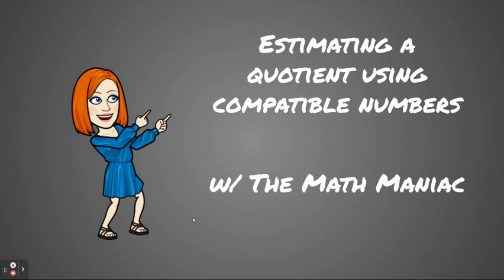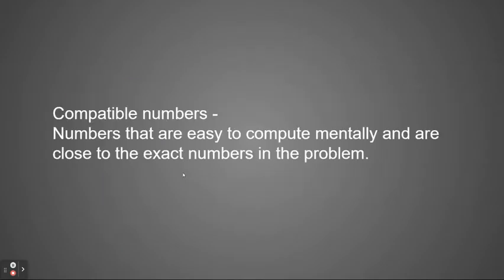Hi boys and girls, welcome back. Today we're going to be estimating quotients using compatible numbers. So the first thing we need to understand is what is a compatible number? A compatible number are numbers that are easy to compute mentally and are close to the exact numbers in the problem. So we're going to be trying to do mental math here.